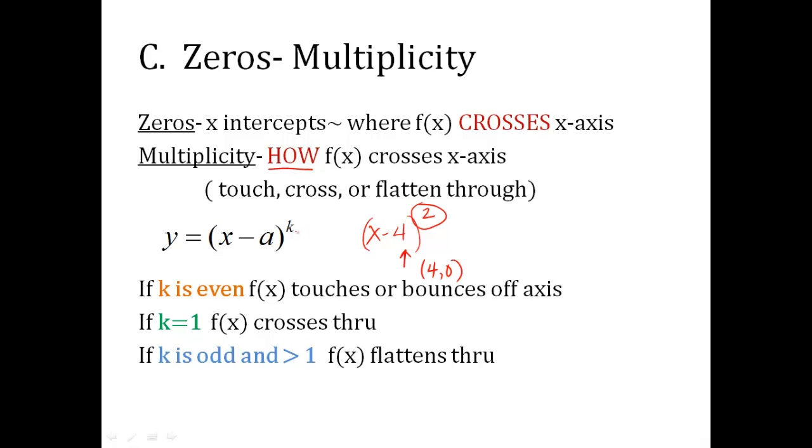So if the k, that's the power, if it's even, it's going to touch or we say it bounces off that axis. So it would look like this. It would just bounce right there. If that k value right there is just a 1, then it crosses through. If it had been x minus 4 just like that, then it would cross through right there, just like normal.